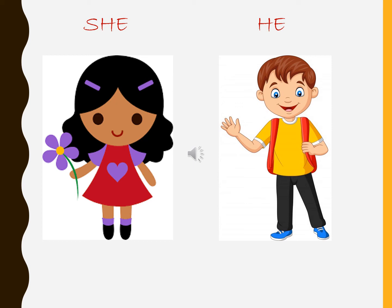The first picture is a picture of a beautiful girl, and the pronoun that we use for a girl is 'she'. In the second picture, look at this cute little boy, and we have already discussed that the pronoun we use for a boy is 'he'.